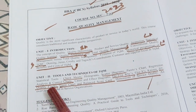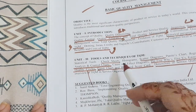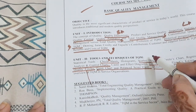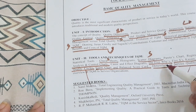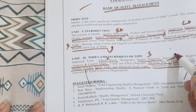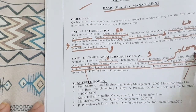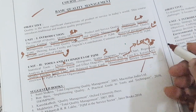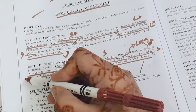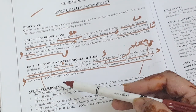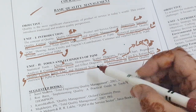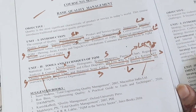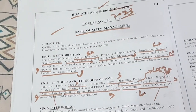Moving on to the second unit, Tools and Techniques of TQM: check sheets will come for a short question, scatter diagrams also for short. The five Y's and five S will come for long — both are very important. JIT and quality circles will come for short. Gantt chart and balanced scorecard will come for short. Dimensions of service quality will come for a long question.